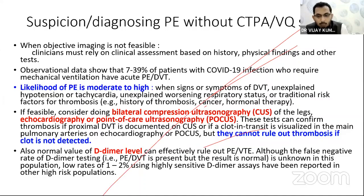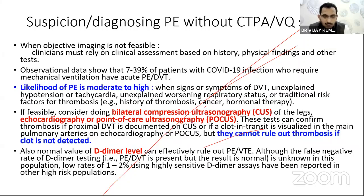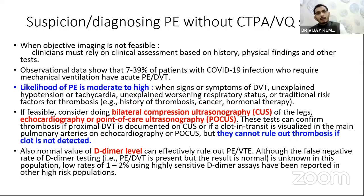For patients with a moderate to high risk of pulmonary embolism, point-of-care ultrasound, bilateral compression ultrasound, or bedside echocardiography will help identify clots at respective sites without transporting the patient to the CT room. The downside is that these cannot rule out PE if clot is not detected. An important marker: if D-dimer is below the cutoff, pulmonary embolism can be assumed ruled out; if D-dimer is elevated, it may be a non-specific elevation.